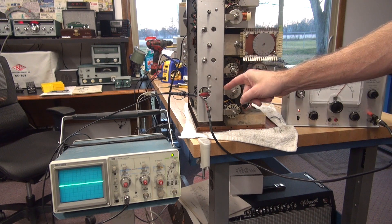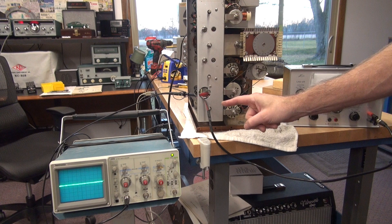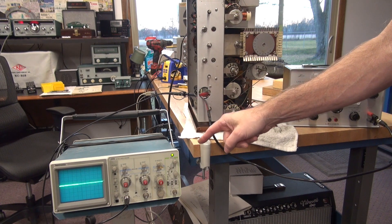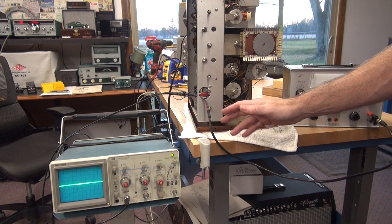We're going to inject a signal. We're going to use our audio gain and be able to see that signal on the oscilloscope right at the grid pins of the 807.